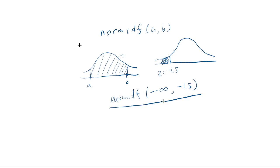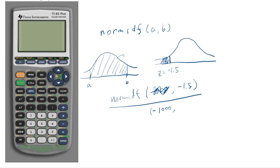And that's what throws off a lot of people. What you have to do is instead of putting negative infinity — since calculators don't give exact answers anyway — just put in some big negative number. Negative 1,000 is good enough. So just put normCDF(-1000, -1.5) and it will give you the area left of negative 1.5.